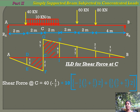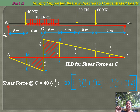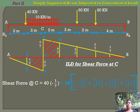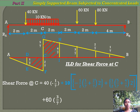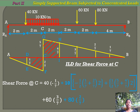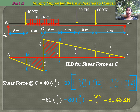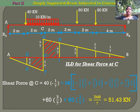We multiply 40 kilo newton by minus 1/7, plus 10 kilo newton multiplied by the area under the load in the influence line diagram — the negative area in portion C-D-E-F and the positive area G-H-C-I. Then 60 kilo newton multiplied by positive ordinate 3/7, plus 80 kilo newton multiplied by ordinate 2/7. We get the value 360/7, so the shear force at C is 360/7 kilo newton for the given position of loads.